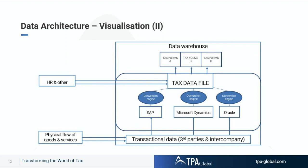HR and other data is a separate file that obviously ties in with wages tax and social security as well. In some countries — like where Raymond used to work as global head of tax of ADECO — the biggest risk on taxes is wages tax. In their tax monitor, they would weight wages tax as the highest risk in the universe, not corporate income tax. This also has an impact on different dashboards for different industries.